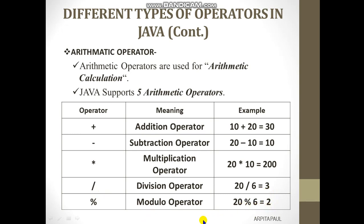The basic difference between the division operator and the modulo operator is that the division operator returns the quotient part, while the modulo operator returns the remainder part. These are the five basic arithmetic operators.